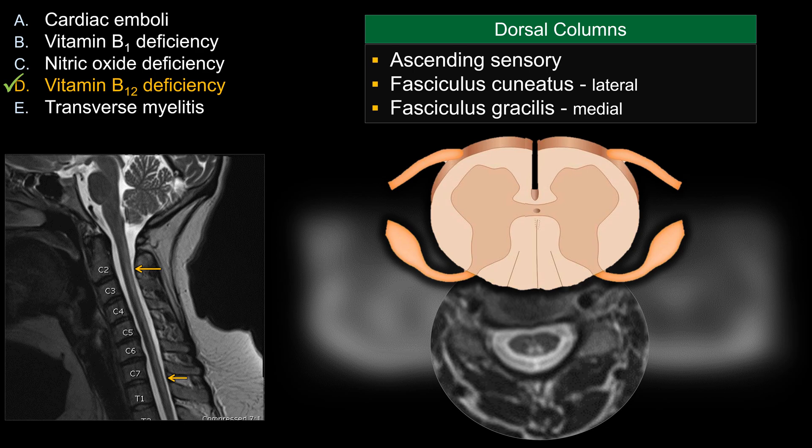A quick review of the dorsal column pathway: the dorsal column is part of the ascending sensory pathway, which is why our patient was presenting with a sensory issue. The dorsal column comprises two main components — the lateral part is fasciculus cuneatus, and the medial portion is fasciculus gracilis. The cuneatus is involved with the upper extremity and the gracilis with the lower extremity.